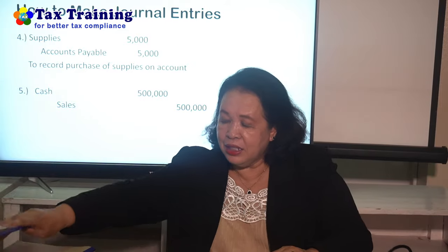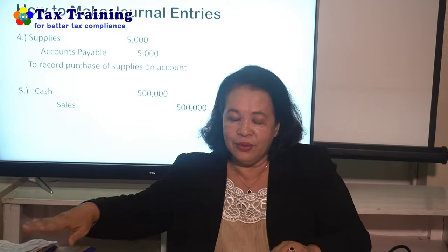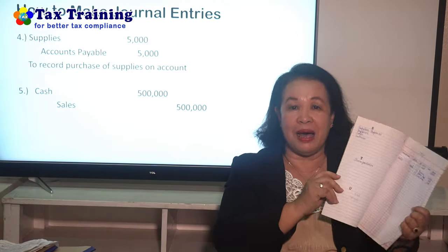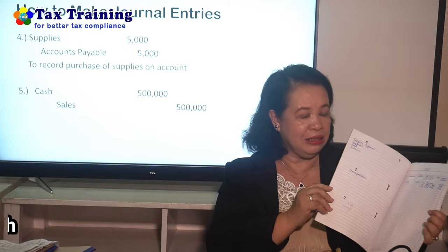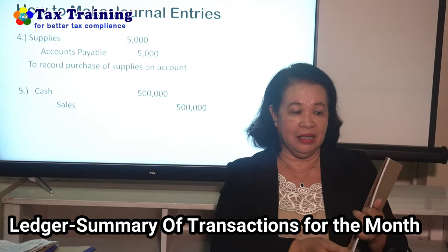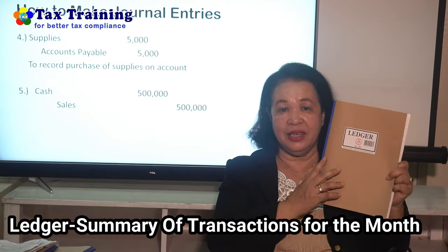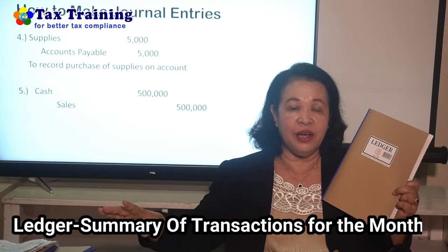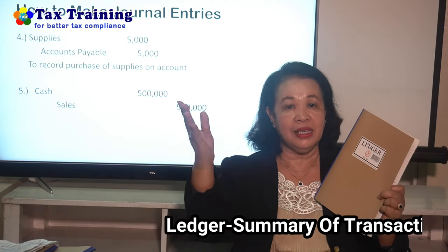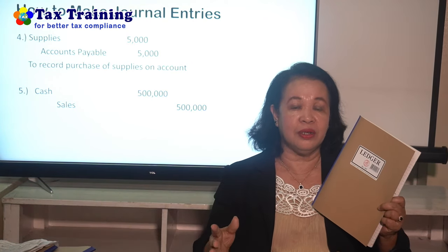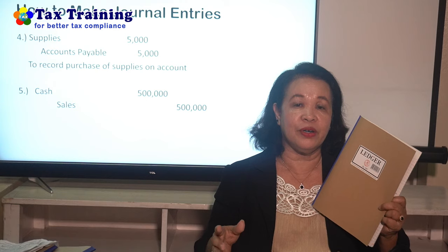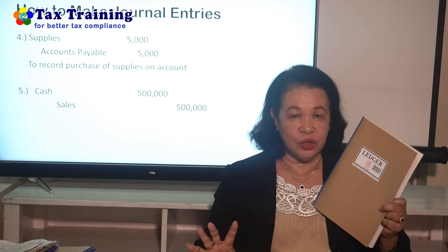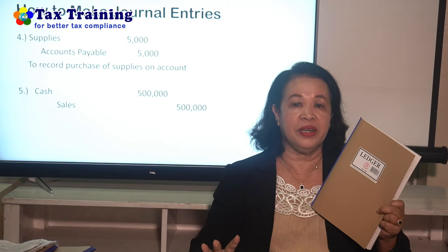After recording, we move to the ledger — this is the summary. The ledger summarizes all our transactions for the whole month because we are going to prepare reports: income statement and balance sheet — the result of operations. For BIR purposes, we prepare reports to file — if VAT-registered, we pay VAT; if percentage tax, we pay percentage tax.